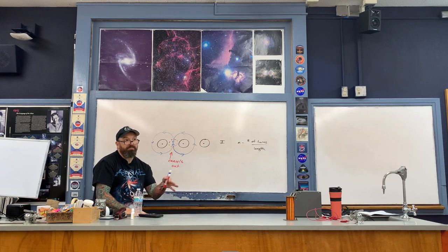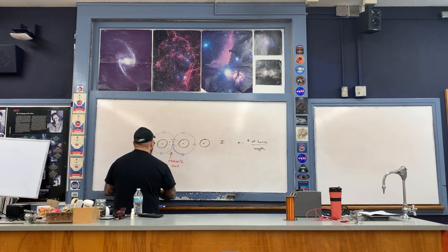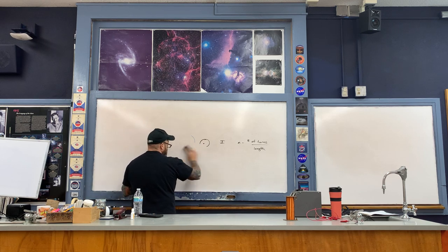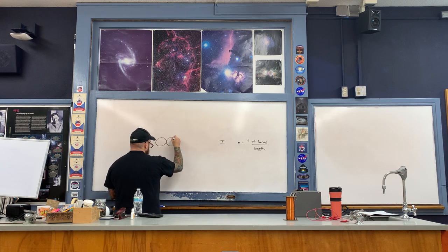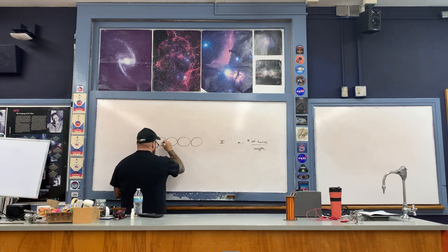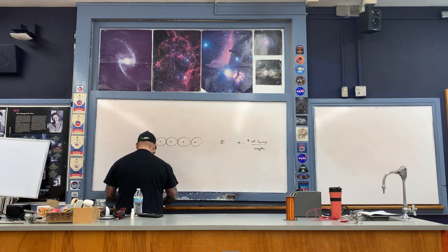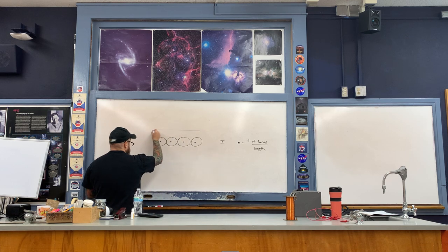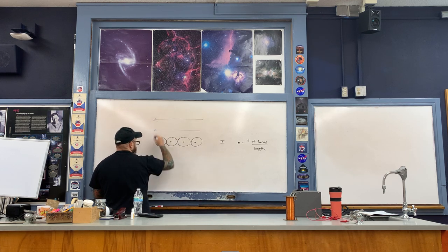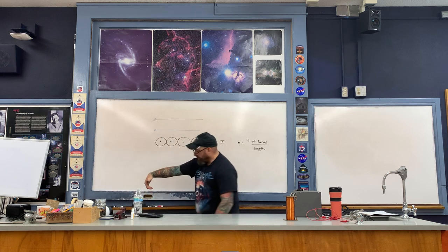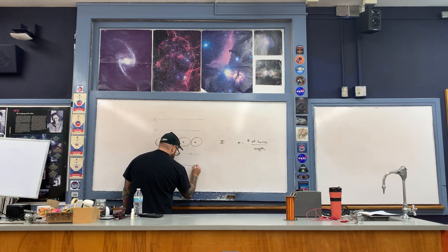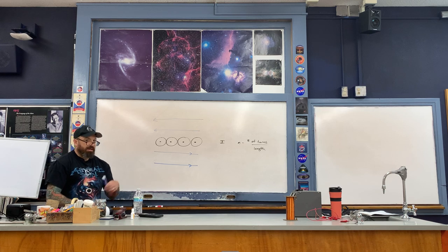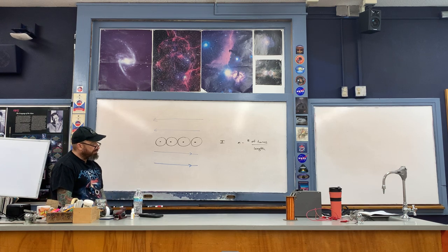The net magnetic field is constant and parallel to the sheet — pointing left above and right below. That's how we understand the shape of the magnetic field associated with the infinite sheet.